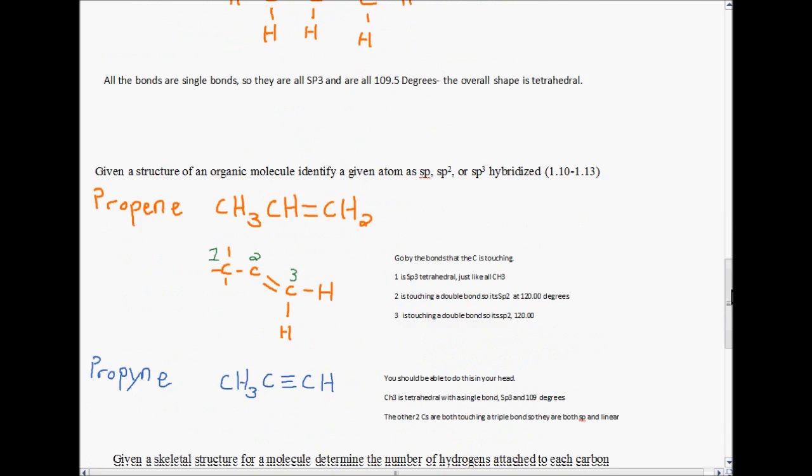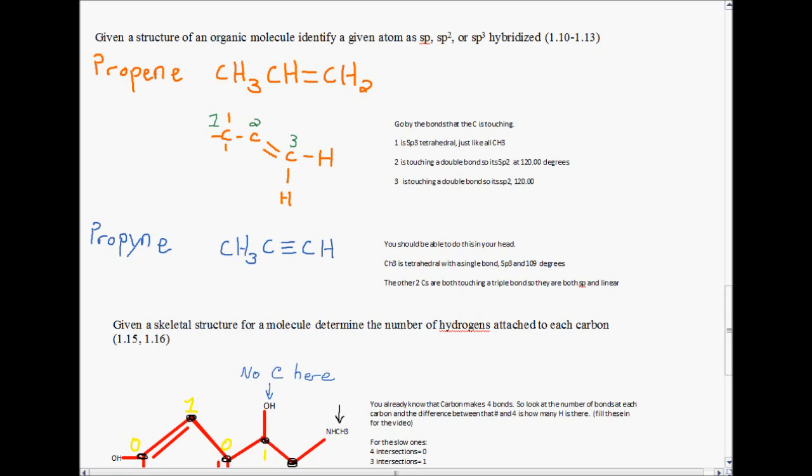So, going on to the next one, given a structure of an organic molecule, identify given atom as SP, SP2, or SP3 hybridized. So, propene is CH3CH double bonded to CH2. Here, you have a CH3, which is usually its own guy. CH is double bonded to CH2. So, to do these, you go by the bond that carbon is touching. So, for carbon 1, this carbon is only touching single bonds. So, that's SP3 tetrahedral, just like the CH3 usually is. Carbon number 2 here is touching a double bond. So, you just go by the biggest bond. C2 here is touching a double bond. So, that's SP2 at 120 degrees. And carbon 3 is also touching a double bond. So, that's SP2, 120 degrees.